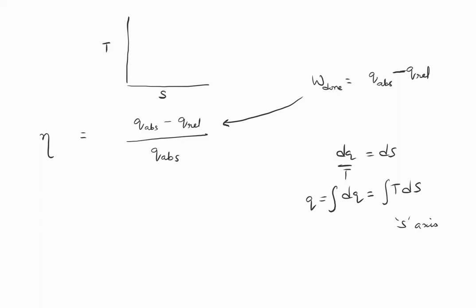When you take a cyclic process, mind you this will always be a cyclic process because you want efficiency for a cyclic engine. So when you take a cyclic process like this, from A to B to C to D in the cyclic process...